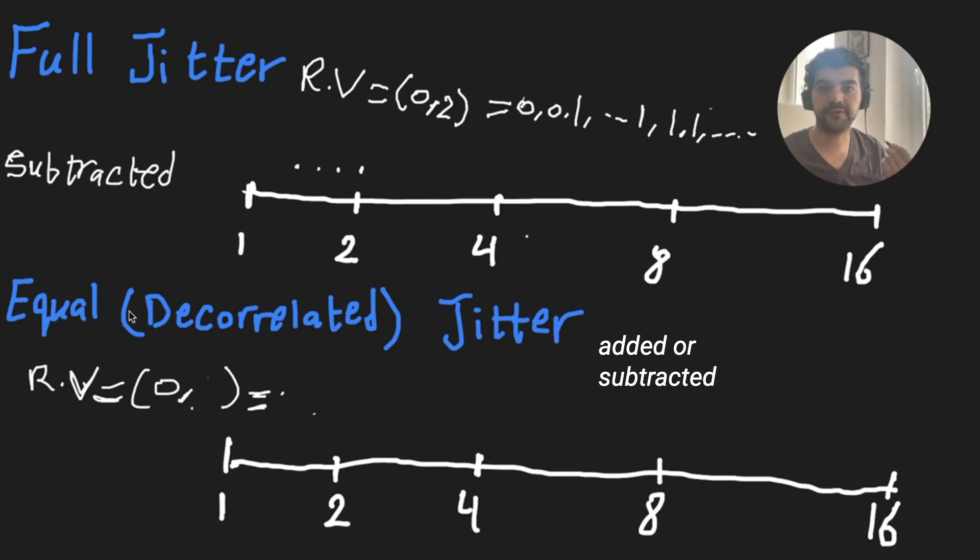Assuming the request fails, we try again. We calculate a new random value between zero and the wait time, which is this time two seconds, somewhere between zero and two. Let's say it generated 1.1. Then we either add it or subtract it from two, so it could be 3.1 seconds or 0.9 seconds. We keep doing that until either the request succeeds or a hard timeout is reached.